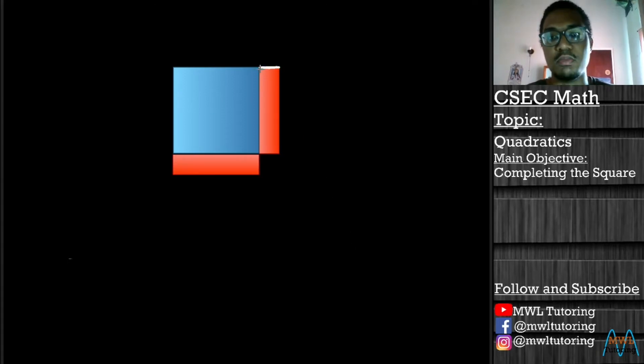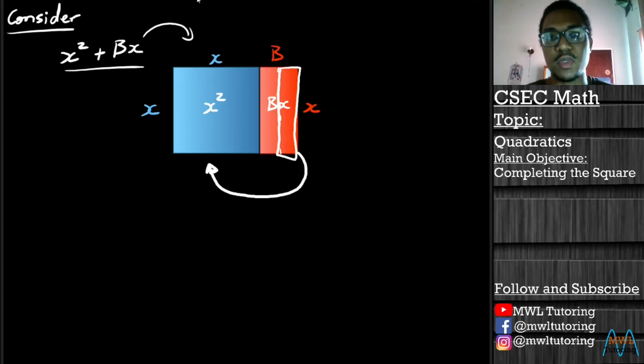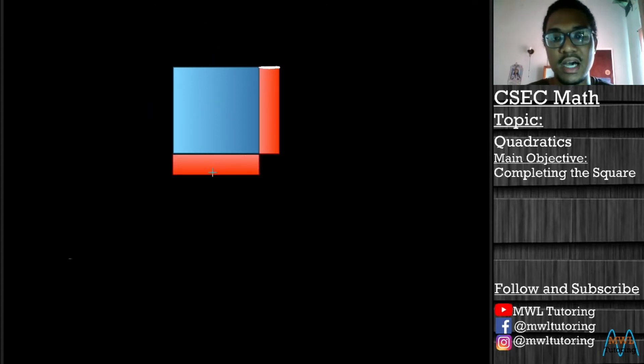And what we're going to do is we're going to take one half of this red rectangle and we're going to move it and put it to lie down just underneath the x squared square. Notice the width here is much shorter because we cut it in half and we took half of it and we put it to lie down just underneath the x squared square. So we have x, x, and now instead of B, because we split our red rectangle in half, the width is now one half B.